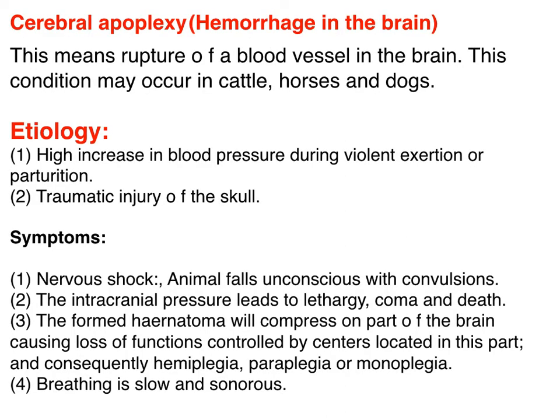Cerebral apoplexy, or hemorrhage in the brain, is the rupture of blood vessels in the brain causing hemorrhage. This condition may occur in adult horses and cattle. Etiology includes high increase in blood pressure during violent exertion or parturition, and traumatic injury of the skull. Symptoms depend on the nervous tissue involved; intracranial pressure rises with lethargy, coma, and death.